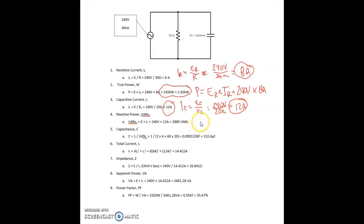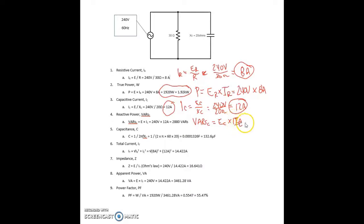Reactive power at the capacitor: using the same formula as in the series circuit. VARs at the capacitor equals the voltage drop across the capacitor times the current through the capacitor, equals 240 volts times 12 amps, and we get 2,880 VARs.